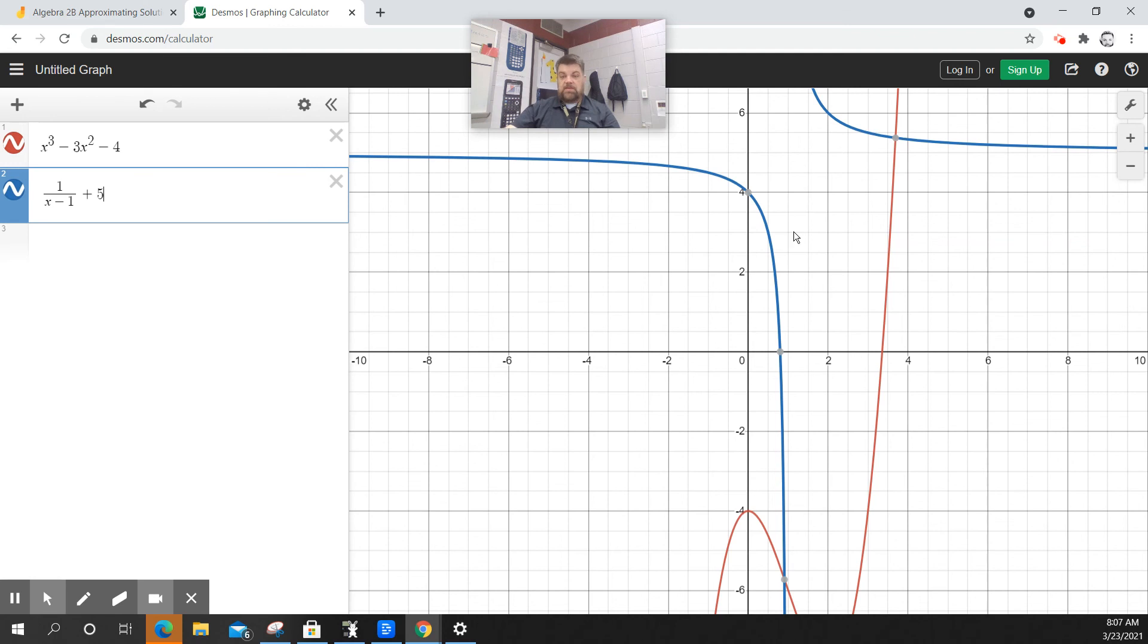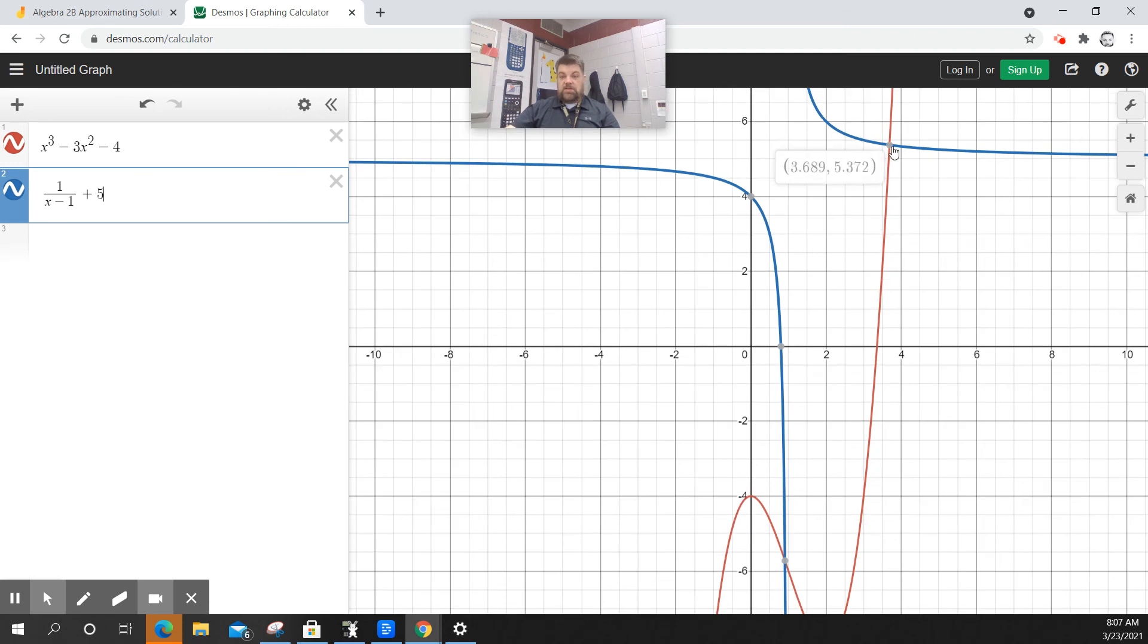So there's two intersections, right? And there's one intersection here. Now if I click on this, boom, I'm looking for the X value. All right, so that's 3.689.